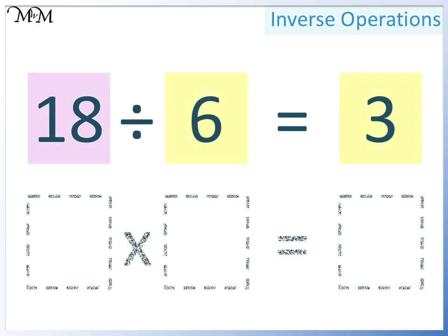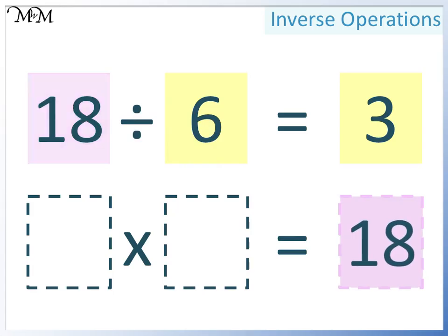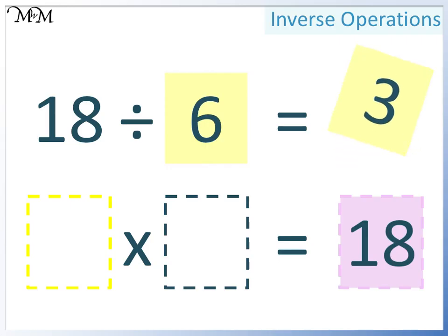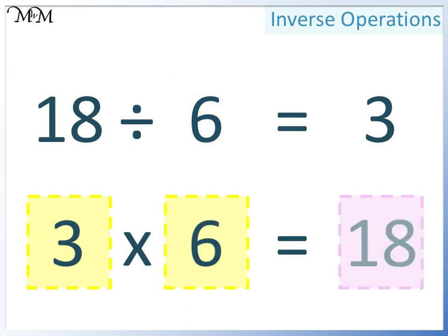Let's look at the second way that we can write this as a multiplication. Two smaller numbers multiply together to make a larger number. The largest number is 18, so it must go here. In this first space, we can have either of the two smaller numbers — this time we'll have 3. And so 6 must go here. 3 times 6 equals 18.